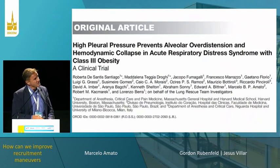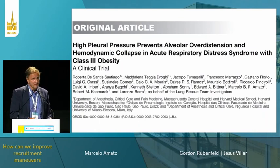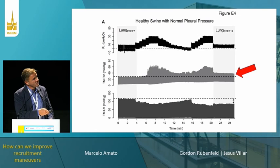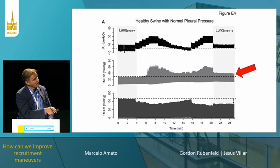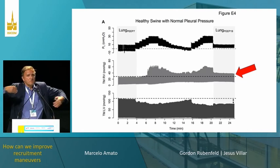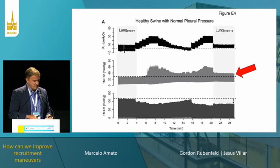Something very interesting and useful to know at the bedside: if you have high pleural pressure, you are protected against hemodynamic problems. In this study, we measured transmural right ventricular pressure and transmural left ventricular pressure. Before and after recruitment — if the animal is thin, after the recruiting maneuver you increase afterload for the right ventricle, but decrease afterload for the left ventricle due to the large surrounding pressure.